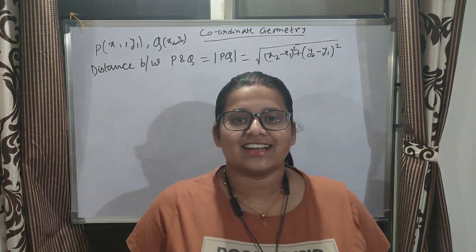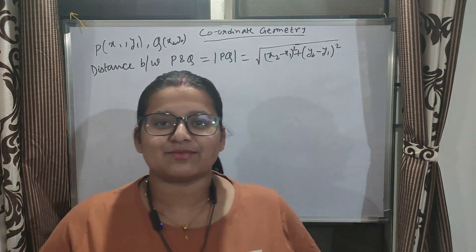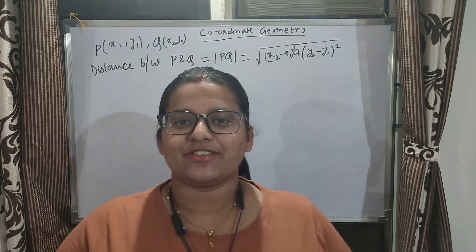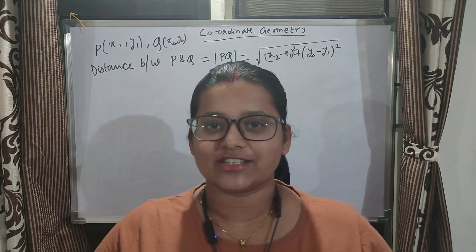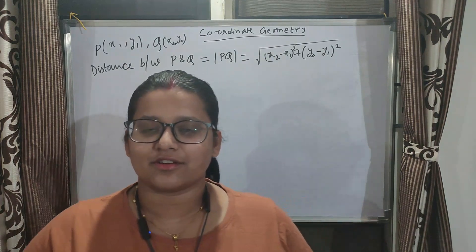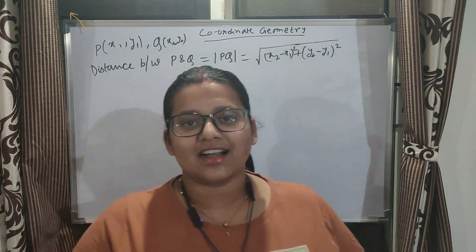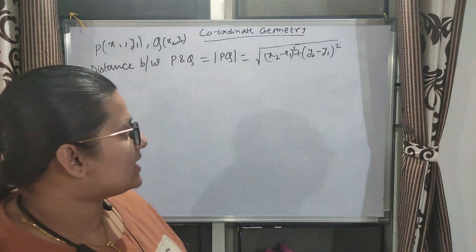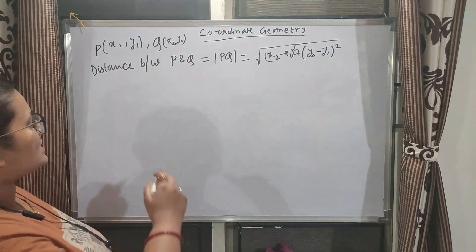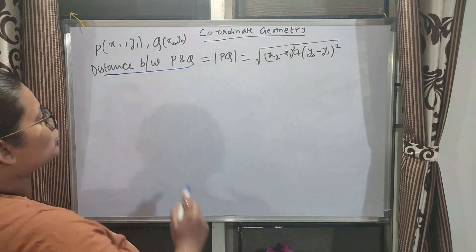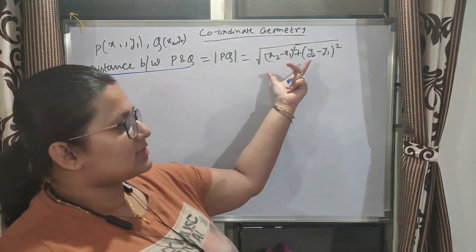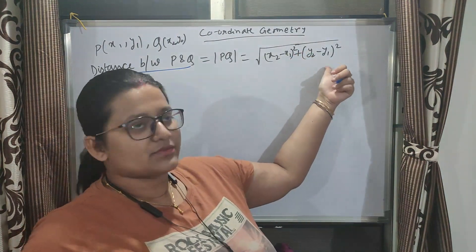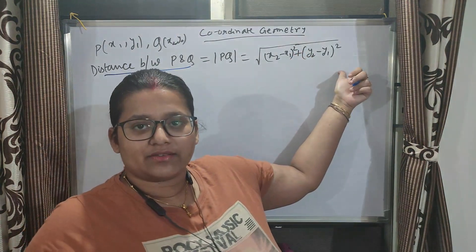Good morning everyone, welcome back to my channel Math Classes by Joita. We were learning coordinate geometry. The first part is already done, and I am going to continue from that. In the last class, we learnt the distance between two points P and Q: that is the square root of (x₂ - x₁)² + (y₂ - y₁)².